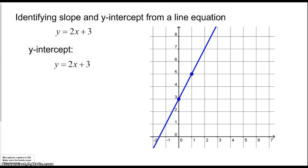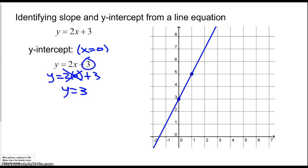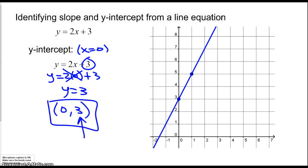Let's take a look at the y-intercept. Using the same equation, y equals 2x plus 3: the y-intercept always happens when x is 0. When I plug 0 in for x, the 2x term goes away, and I'm left with y equals 3. That's why the number on the outside — the constant — is the y-coordinate of the y-intercept.